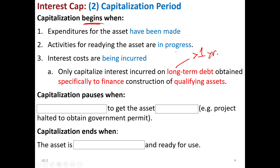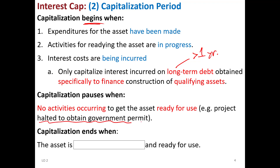We pause capitalizing interest when no activities are occurring to get the asset ready for use — for example, a project halted to obtain a government permit or due to a workers' strike. Any interest incurred during a strike needs to be expensed. When contractors come off strike and start working again, we can start capitalizing interest again. We stop capitalizing interest when the asset has been substantially completed — basically, it's ready to be moved in.